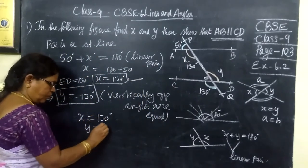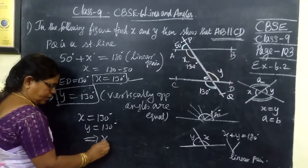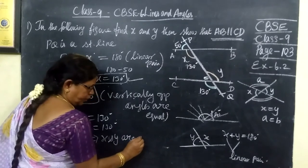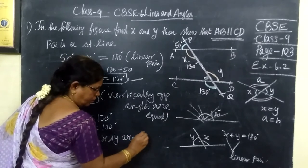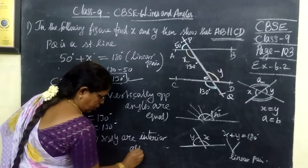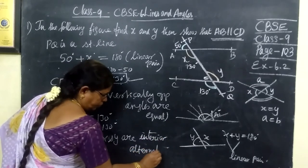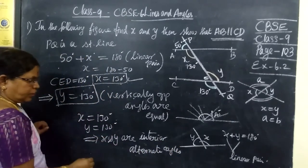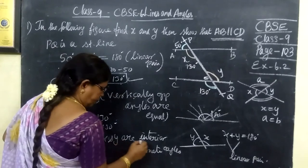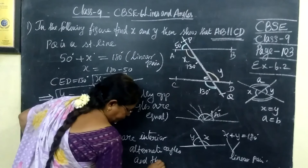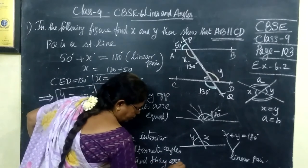Which implies X and Y are definitely interior alternate angles. So interior alternate angles are equal. Here X and Y are interior alternate angles and they are equal.